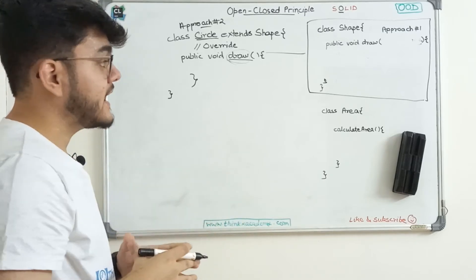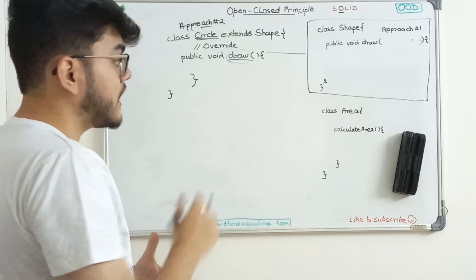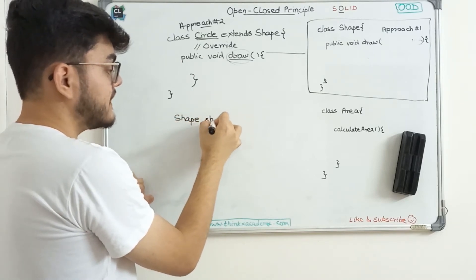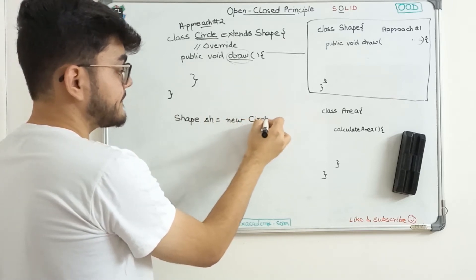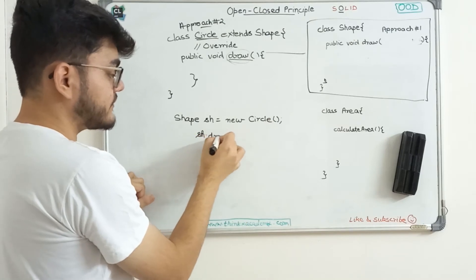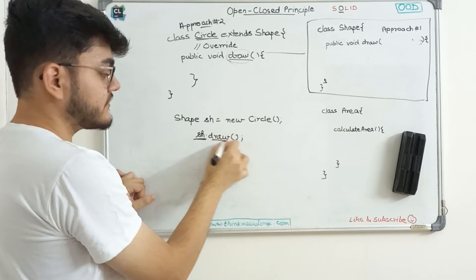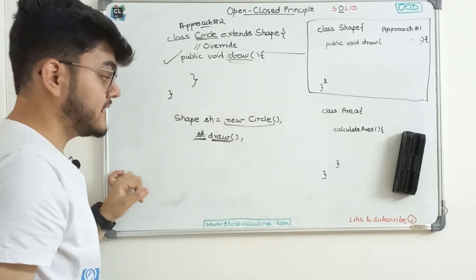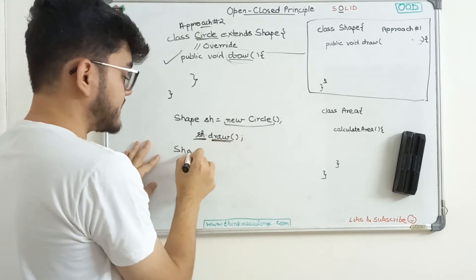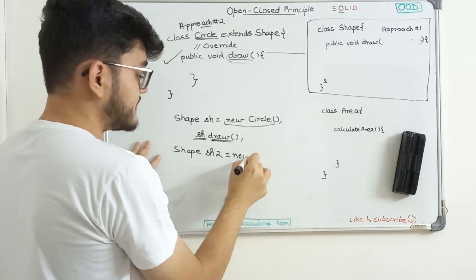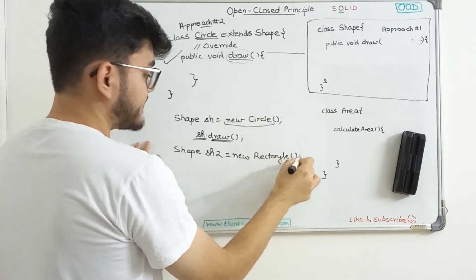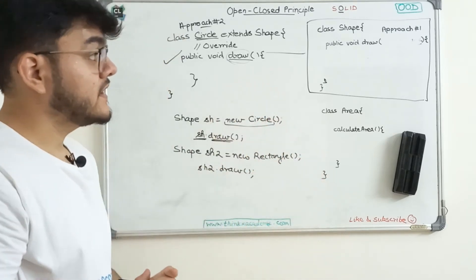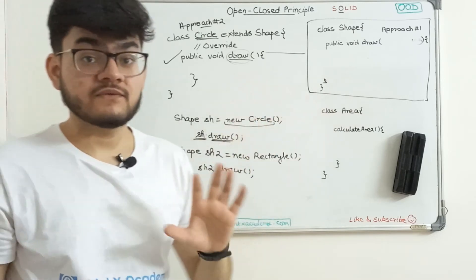This approach is a combination of inheritance and polymorphism — specifically runtime polymorphism, which is method overriding. Compile-time polymorphism is overloading. To call the draw function, just create a reference to the shape class but instantiate an object of the circle class: shape sh = new circle(). When you call sh.draw(), the shape class draw function would normally be called, but since it's a circle object, it gets overridden and the circle's draw is called. Similarly, shape sh2 = new rectangle(), then sh2.draw() for rectangle. This is approach two.